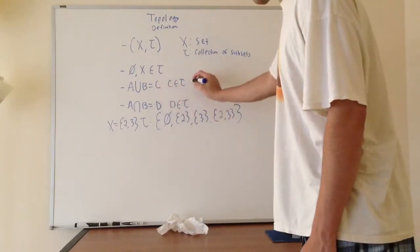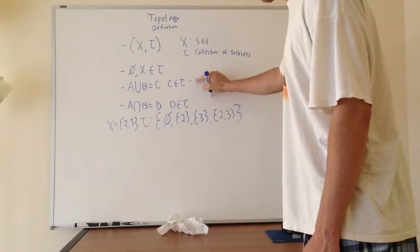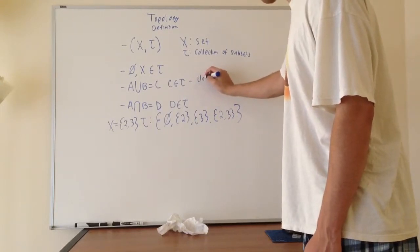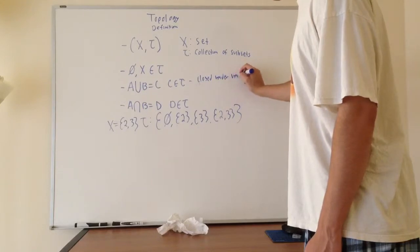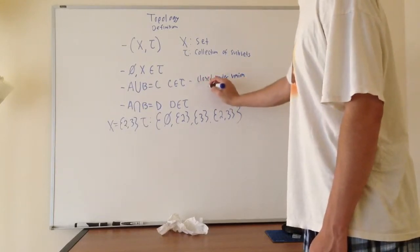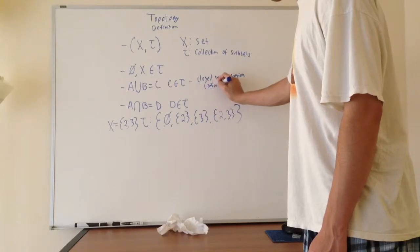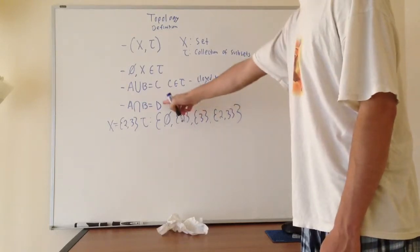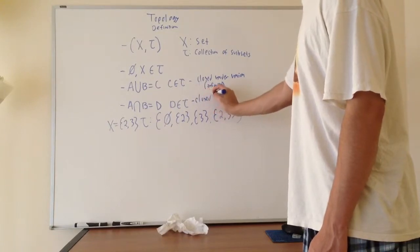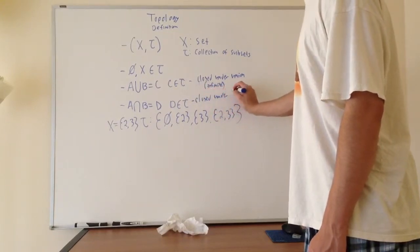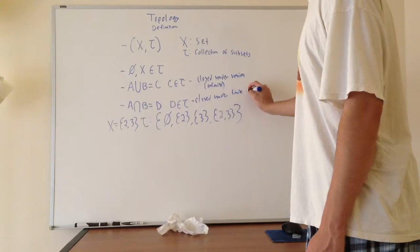So it's an important note that for unions, they can be infinite. Actually, I'll write the whole thing out. I'll say closed under union, and it can be infinite. But for intersection, it's only closed under finite intersection. That's the condition.